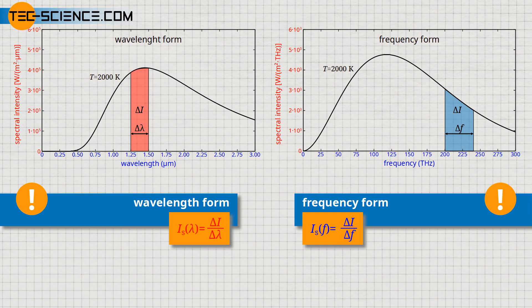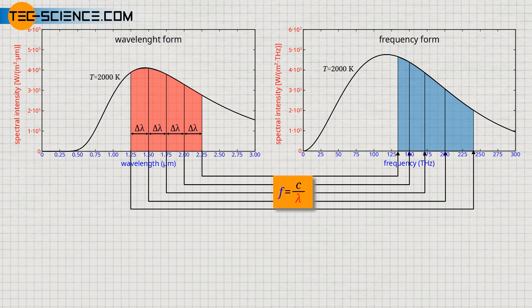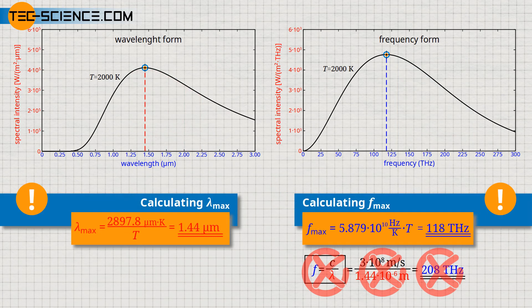Wavelength spectra and frequency spectra therefore cannot be compared with each other by the usual relationships. To illustrate this, equidistant wavelength intervals of delta lambda equal to 0.25 micrometers are shown in the diagram. The wavelengths can be converted by the given relationship into frequencies; however, we no longer get equidistant frequency intervals. Thus a valid comparison between the wavelength intervals and the frequency intervals is not given, and the spectral intensities as interval-related quantities cannot be converted in the usual way. Therefore, a different frequency f_max than one could expect from f equals c divided by lambda is obtained when using the frequency form of the spectral intensity.